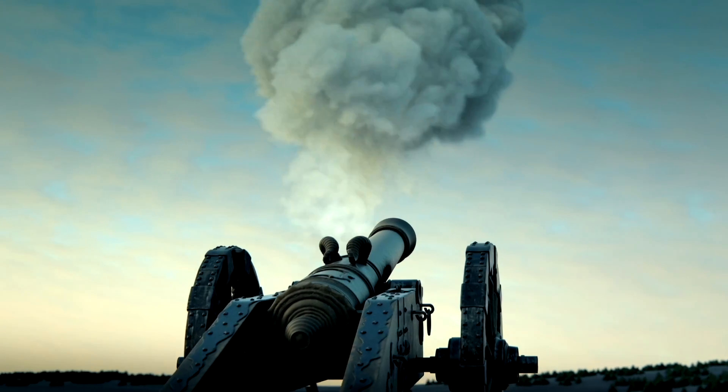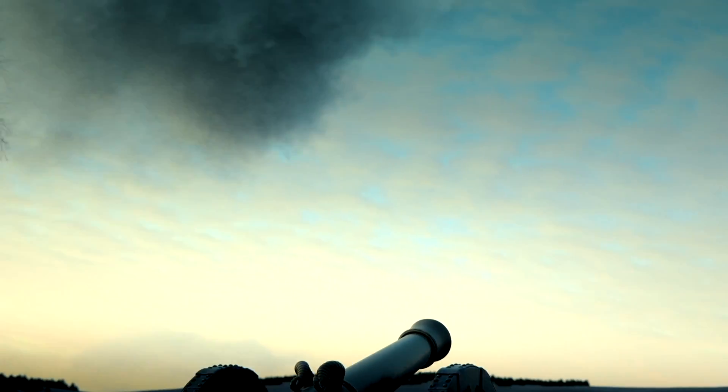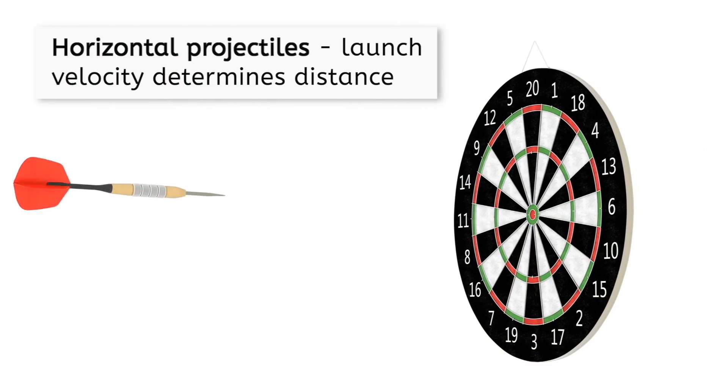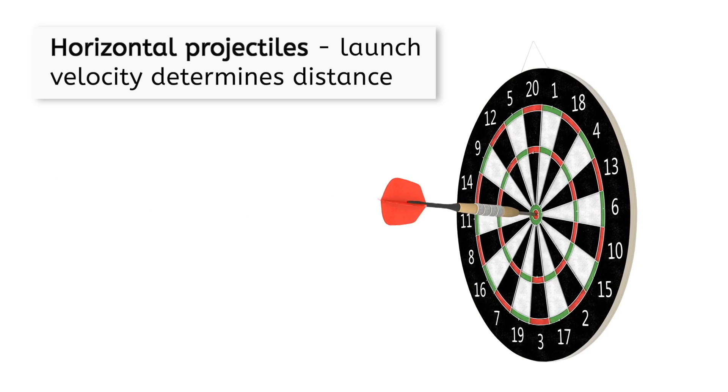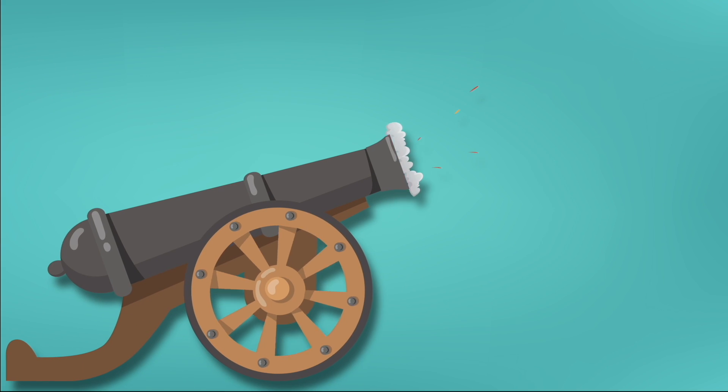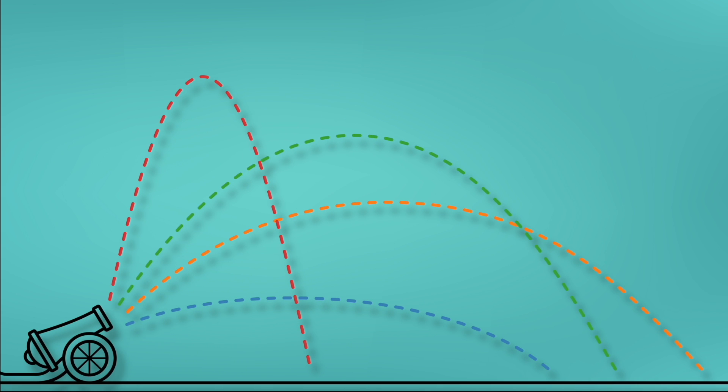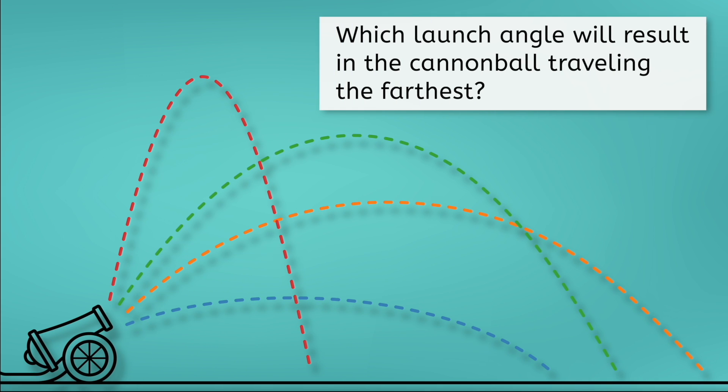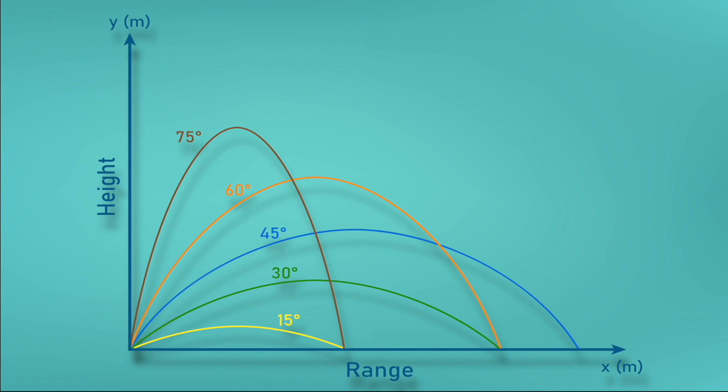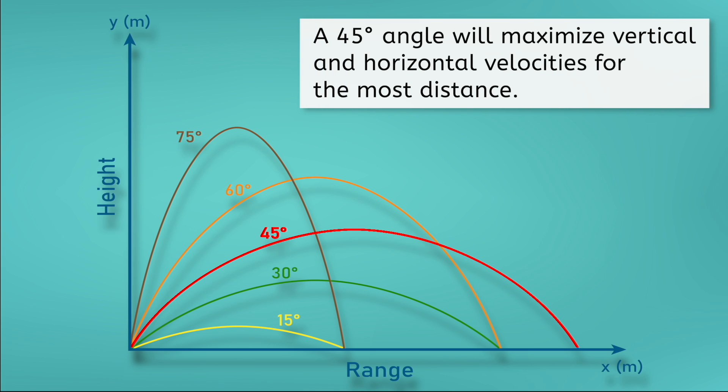When a cannon fires a cannonball, what determines how far the cannonball travels before landing? For horizontal projectiles, we said the launch velocity determined the distance. The launch velocity will matter here too, but there is now another variable to consider, the launch angle. What angle do you think will result in the cannonball traveling the farthest? Here are some possible trajectories. Notice that the 45 degree angle travels the most horizontal distance.